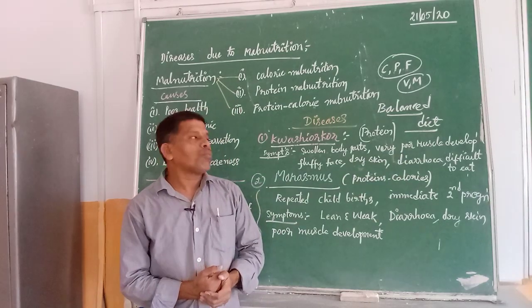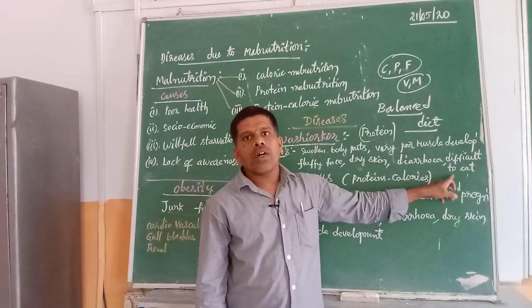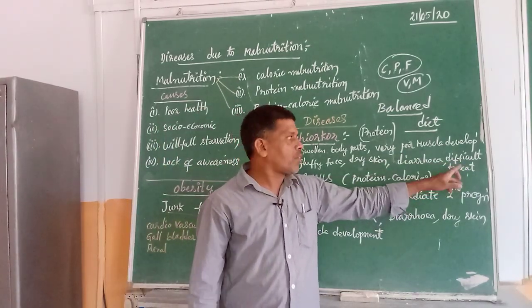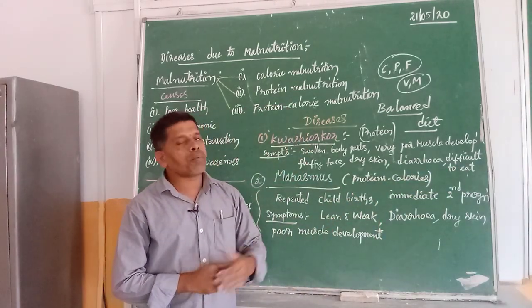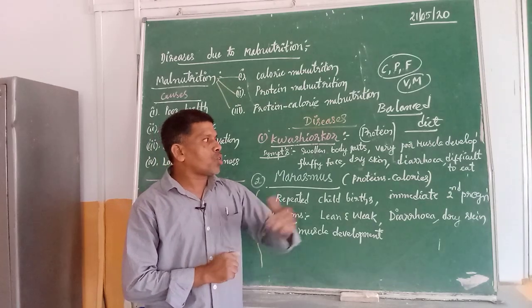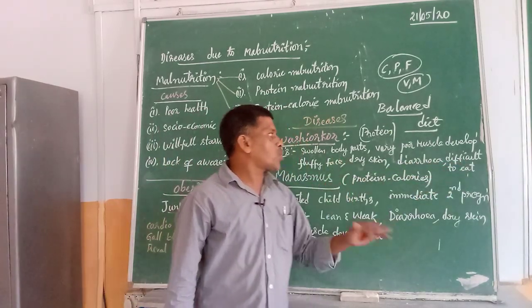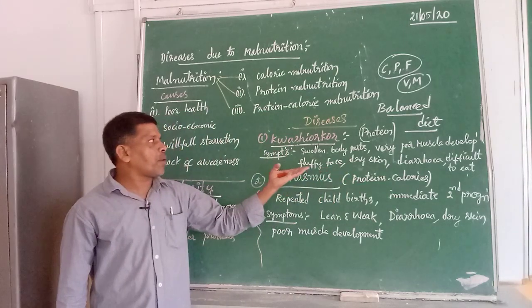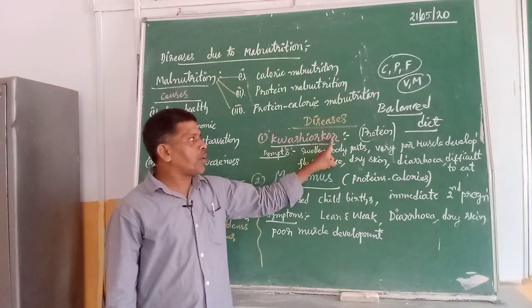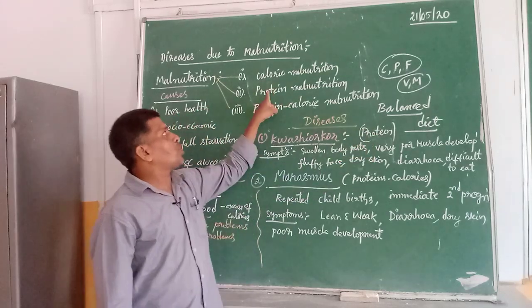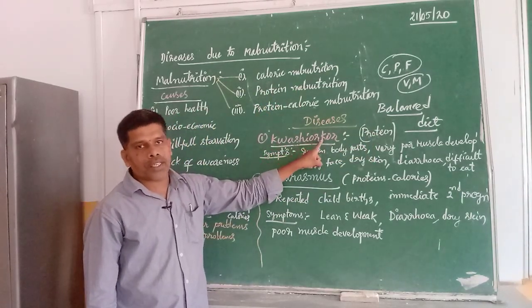There are vomiting and loose motions, and the child finds it very difficult to eat — small quantities of food need to be given, as the child is not able to accept food easily. These are the different symptoms related to Kwashiorkor, which is an example of protein malnutrition.